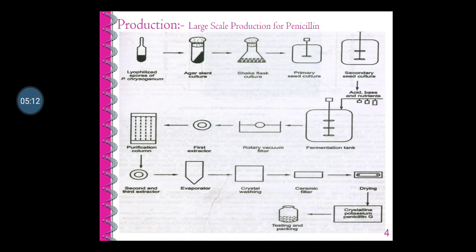For large-scale production of penicillin, the flow chart shows production steps starting from lyophilized spores of Penicillium chrysogenum. The media are placed in a fermentation vessel, sterilized, and inoculated with a suspension of Penicillium chrysogenum. The fermentation vessel is equipped with devices allowing continuous addition of nutrients, acids or base to maintain pH 7 to 7.4, and cooling coils to maintain temperature at 24 degrees Celsius.